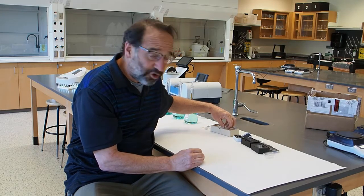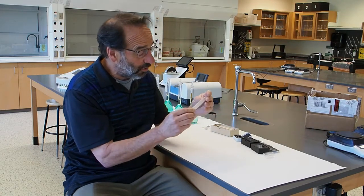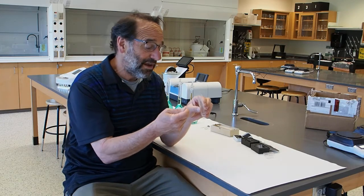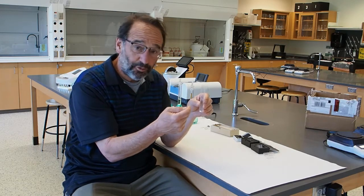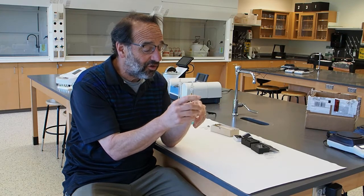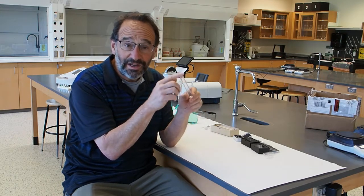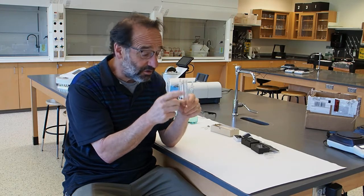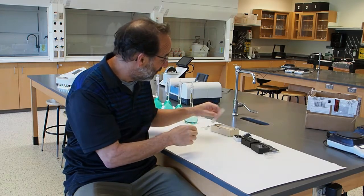We were looking for cuvettes to show you. We found these big long ones. So it's a big long one. It's made clearly for absorption spectroscopy because it's got two clear sides and two cloudy sides. But they're really, really tall, and I have no idea why. I have no idea what they're used for. But we have an old box of them.